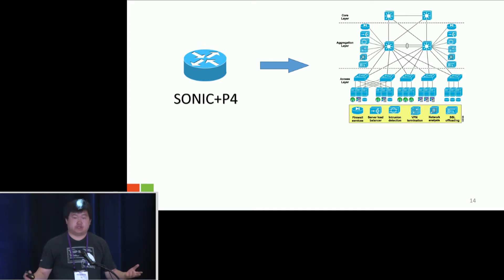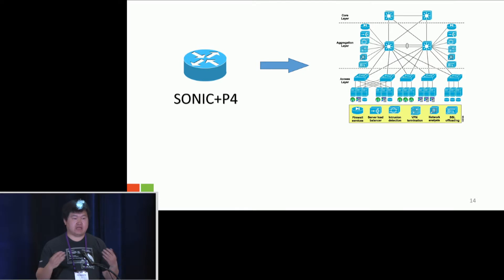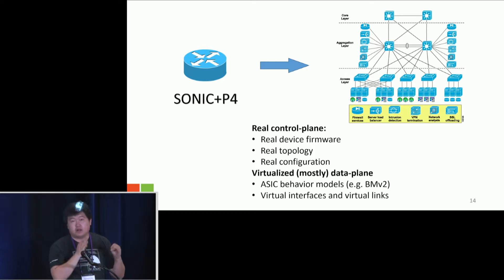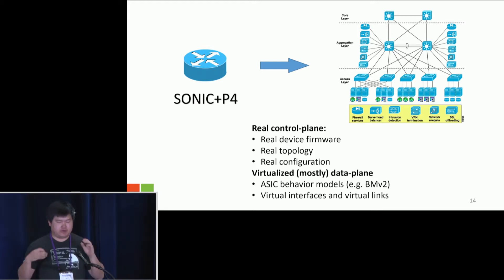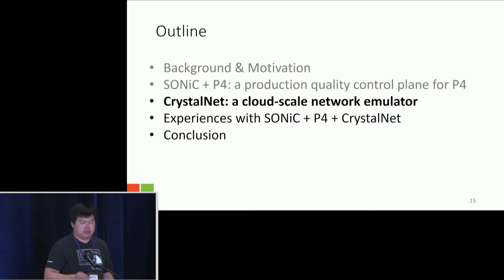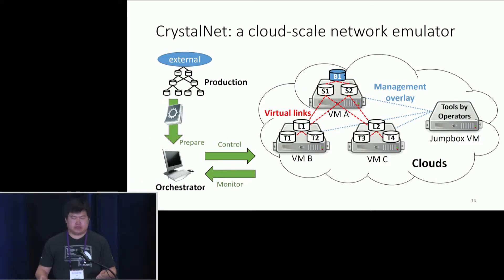The network will be large-scale, with many devices from different vendors, and very high-density. You have three options to achieve this environment. First, do it in your production — not acceptable. Second, make a copy of your production, which means doubling your infrastructure cost — also not acceptable. So the third option is to use real device software, real topology, and real configuration, but virtualize most of the data plane: for ASICs use behavioral models, and for interfaces and links use virtual interfaces and links. CrystalNet is a cloud-scale network emulator designed to achieve this.